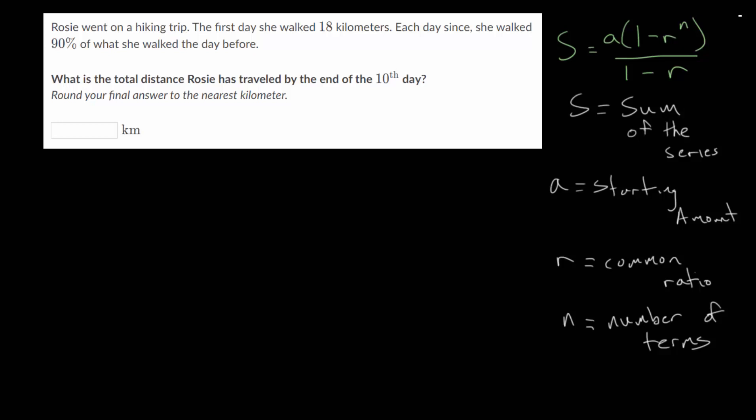So let's look at another word problem for a finite geometric series, and I've recopied the formula here. So we have our sum of the series is equal to our starting term, A, multiplied by 1 minus our common ratio, R, raised to the nth power, where n is the number of terms, all divided by 1 minus R.